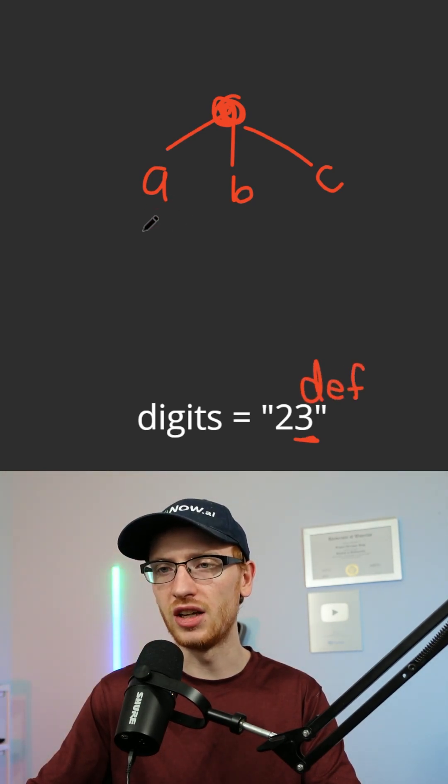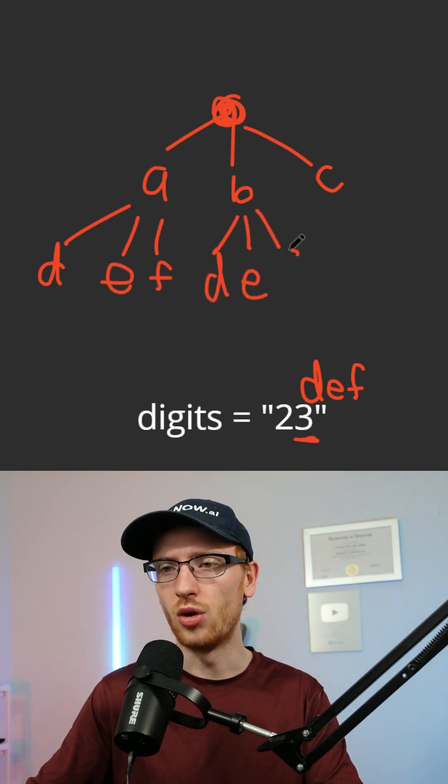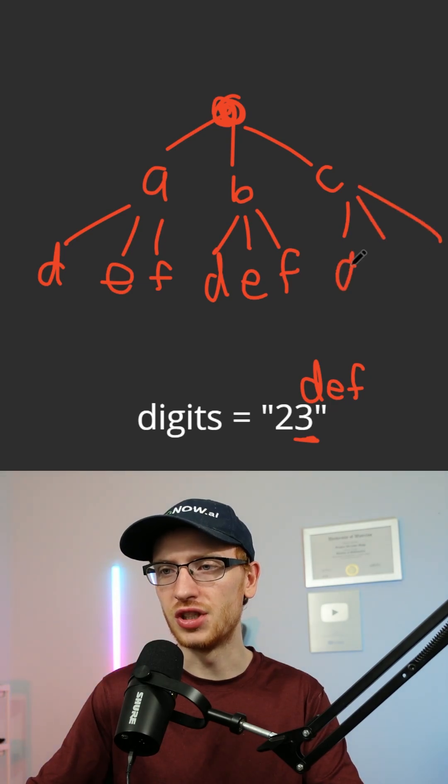Now, if the first digit was an A, then we'd have a D, E, or F. If it was a B, we could have BD, BE, or BF, and the same three options for C.